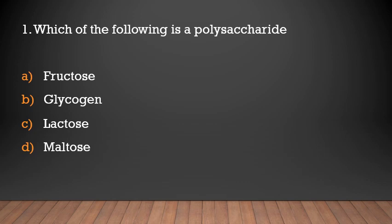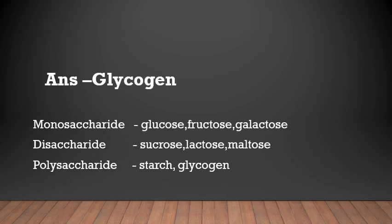Which of the following is a polysaccharide? Fructose, glycogen, lactose, or maltose? Answer: Glycogen. Examples of monosaccharides are glucose, fructose, and galactose. Disaccharides are sucrose, lactose, and maltose. Polysaccharides are starch and glycogen.